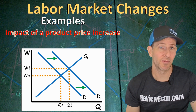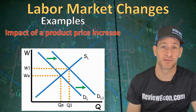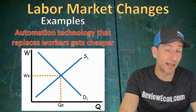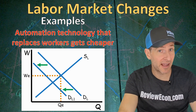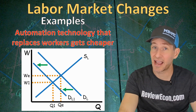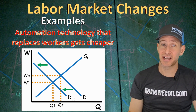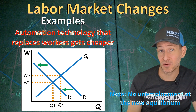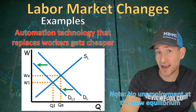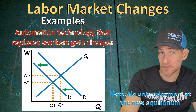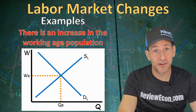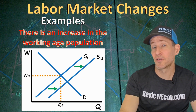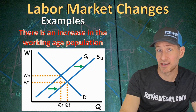If automation technology that replaces workers with machines becomes cheaper, labor appears relatively more expensive. That decreases the demand for workers, lowering both the wage and equilibrium quantity hired. Because we are still at equilibrium — just a new one — there will not be any unemployment at this new equilibrium quantity, since workers no longer being hired don't want to work at the lower wage given the upward sloping supply curve. Finally, if there's an increase in the working-age population, that increases the supply of workers, decreasing the wage and increasing the equilibrium quantity hired.